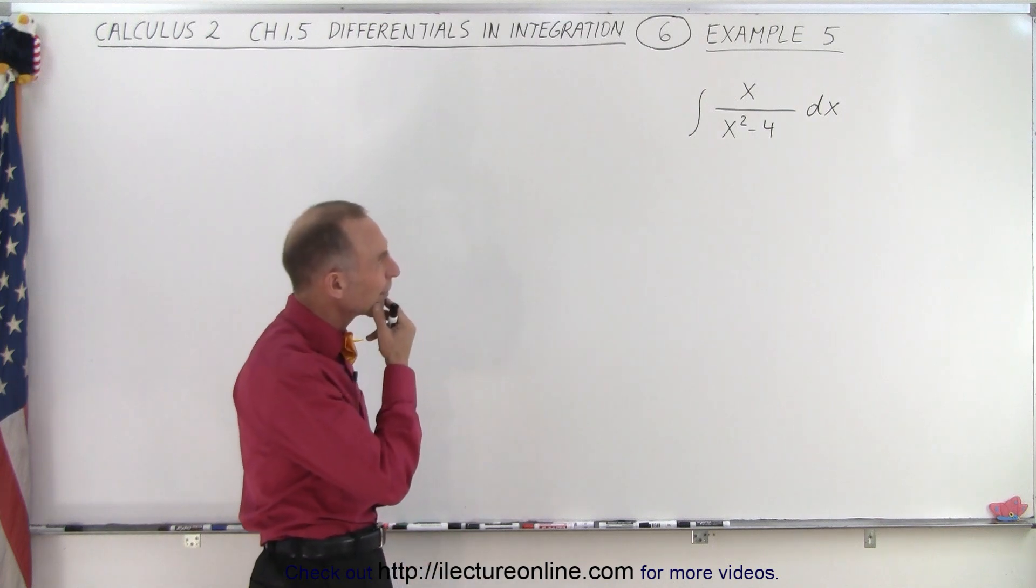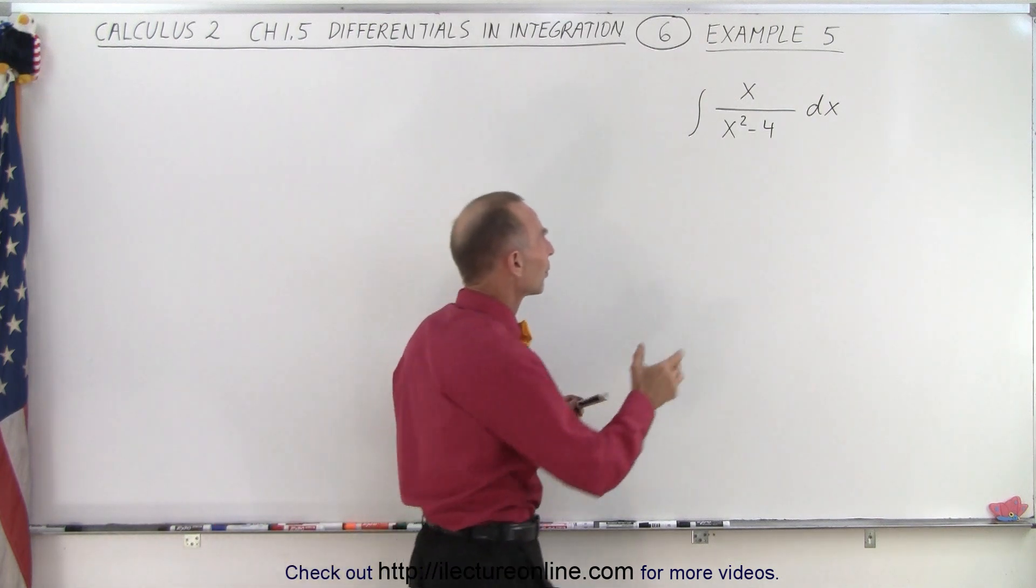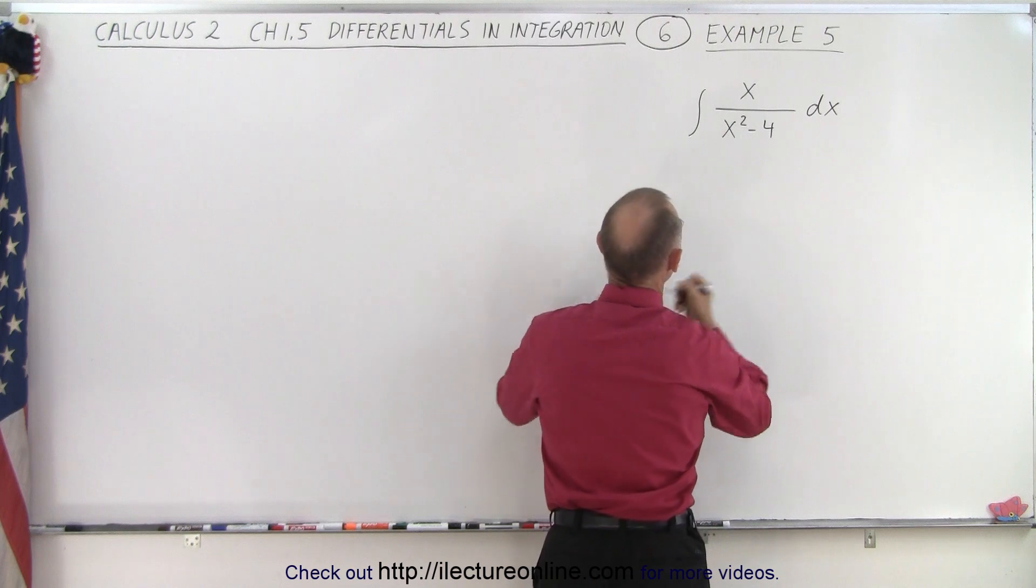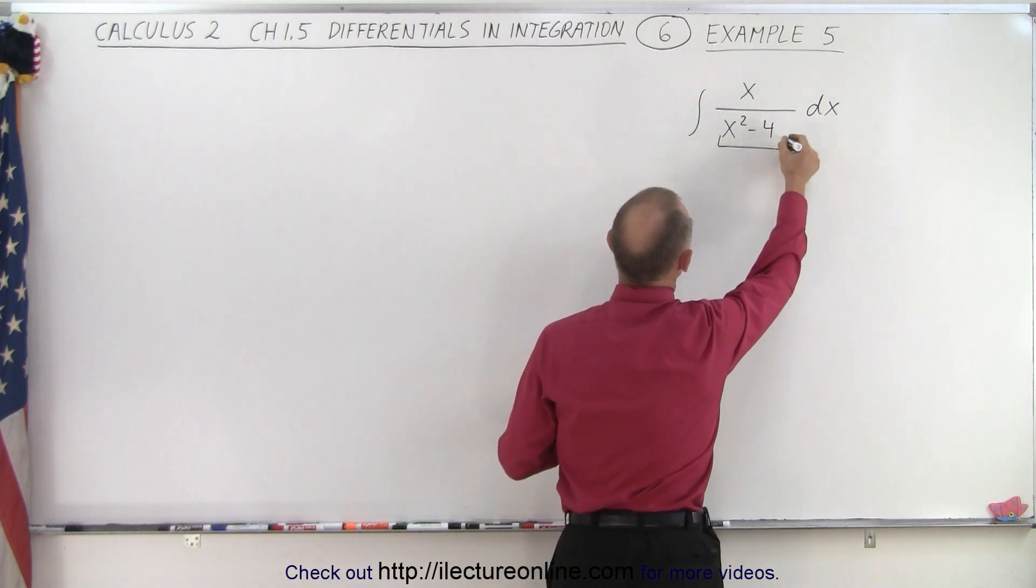And you look at that and go, wow, where did that come from? Well, what we're going to do is we're going to take the denominator only and let that be equal to u.